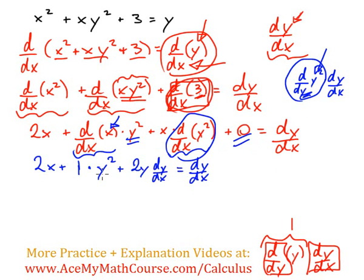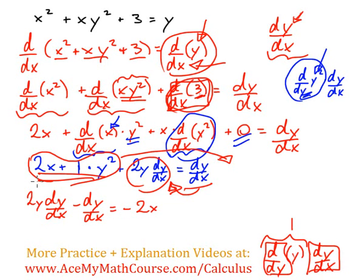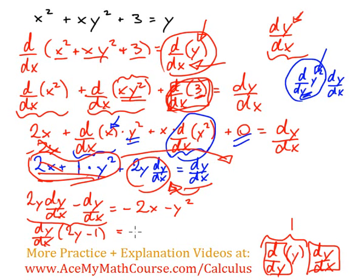Now we want to isolate dy/dx, so I'm going to bring this over to this side — everything that doesn't have a dy/dx to the other side of the equation. So we're going to end up with 2y·dy/dx minus dy/dx equal to negative 2x minus y squared, because I had to subtract 2x from both sides. 1 times y squared is just y squared, so I can subtract y squared from both sides. Then I factor out dy/dx to get dy/dx times (2y minus 1) equals negative 2x minus y squared.